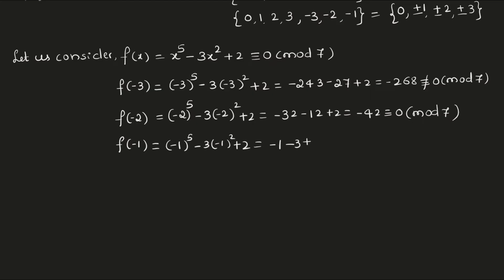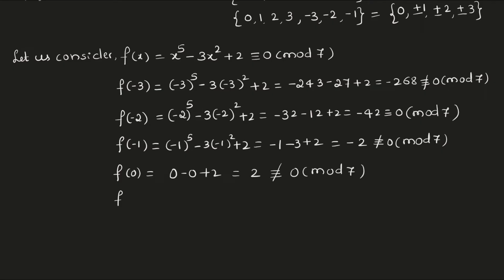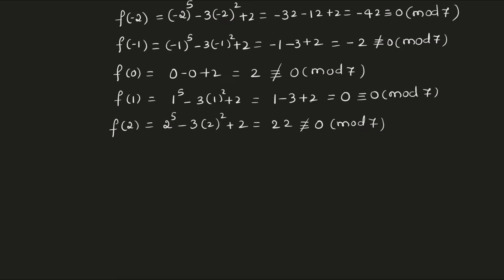Now put minus 3 again — when you put minus 3, you will get the value as minus 2, which is not congruent to 0 mod 7. When you put 0, you will get the value as minus 2 — also not congruent to 0 mod 7. When you put 1, the value will be 1 minus 3 plus 2, that is 0, and 0 is congruent to 0 mod 7. When you put 2, value will be 22, not congruent to 0 mod 7. When you put 3, value will be 218, which is not divisible by 7.